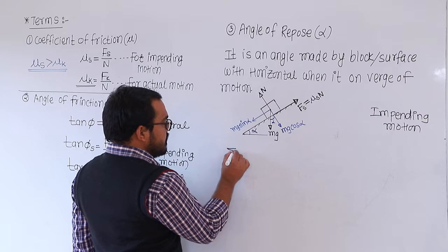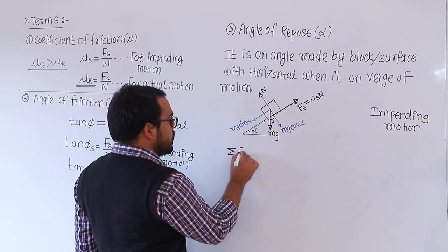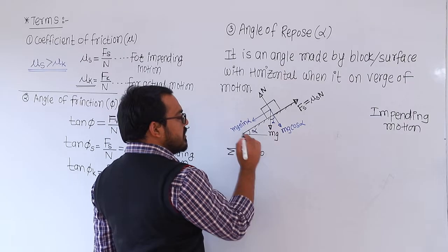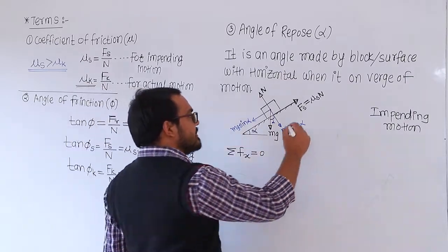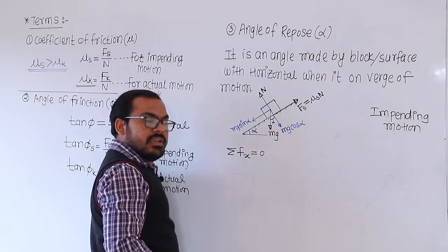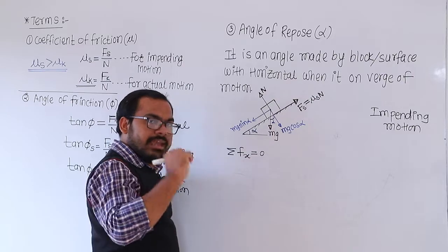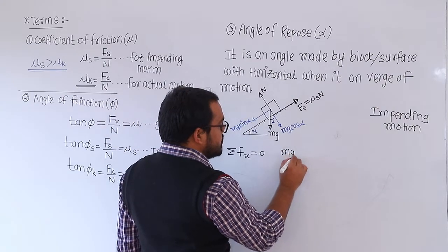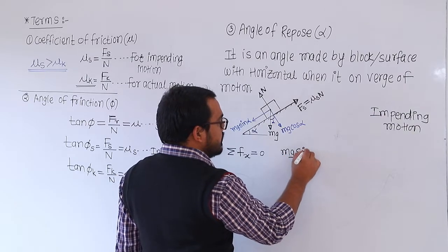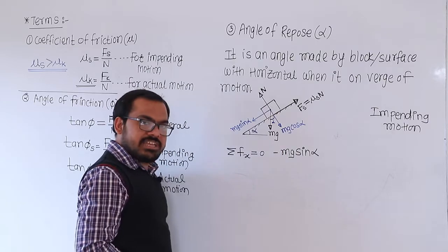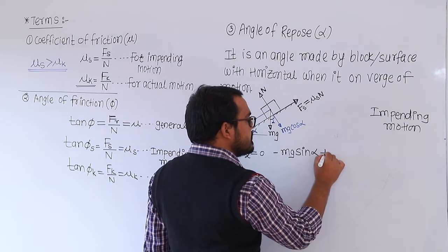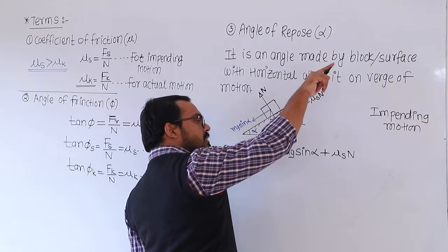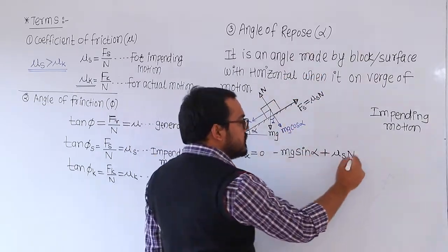Now consider the equilibrium. Summation of forces along the x-axis, which is along the inclined plane, equals zero. Along the plane, the forces are: mg sin alpha acting downward (negative) and mu_s into normal reaction acting upward (positive). So: minus mg sin alpha plus mu_s times N equals zero.